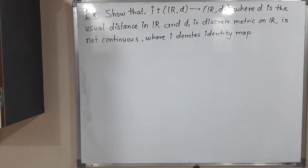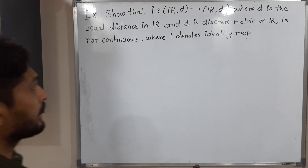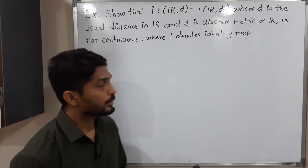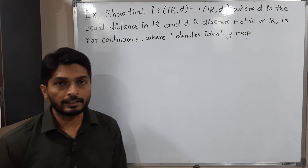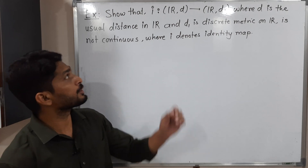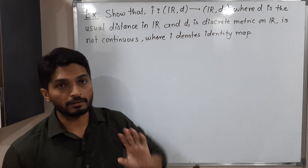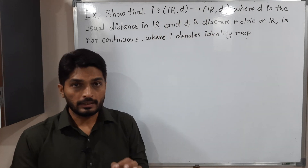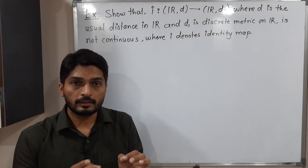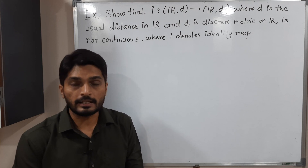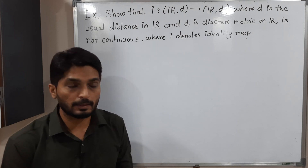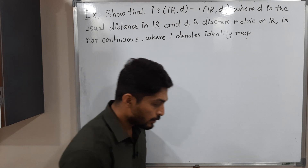Hi everyone. In this video we are going to discuss this example. We have an identity map which is defined from Rd to Rd1, where D is the usual distance and D1 means discrete metric space.